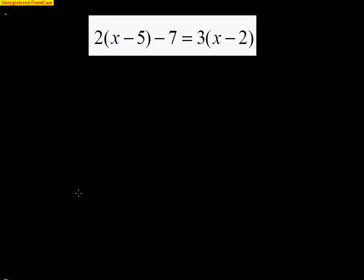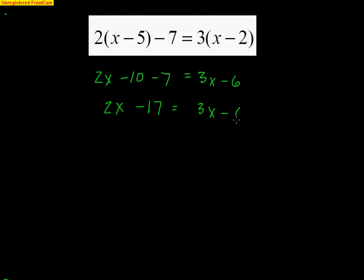Let's start with an easy linear equation. Notice there's no x-squareds, no square roots, no fractions — only x to the first power, meaning it's first degree. I'm going to distribute: I get 2x minus 10 minus 7 on the left, and 3x minus 6 on the right. Combining like terms gives 2x minus 17 on the left and 3x minus 6 on the right. Now I'll get the variables on one side by subtracting 2x from both sides, leaving negative 17 on the left and x minus 6 on the right. So I have 1x, which is exactly what I'm solving for.